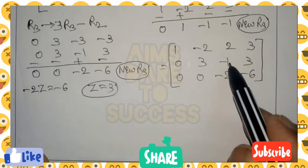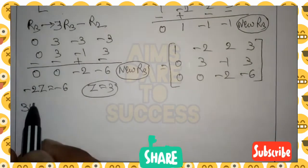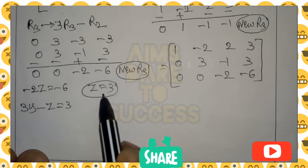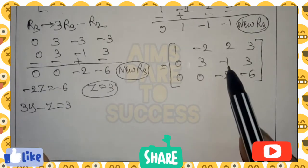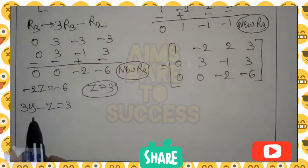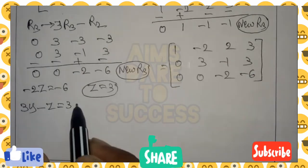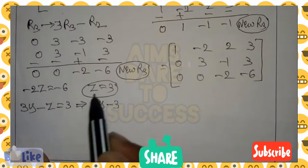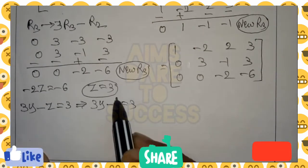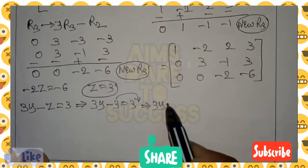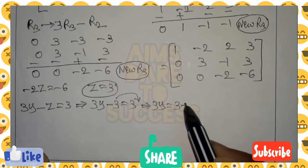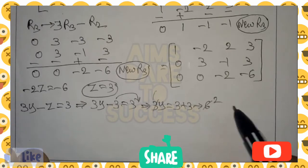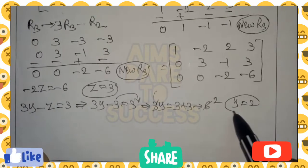Second row values are Y-related and Z-related. So 3Y minus Z equals 3. Substituting Z equals 3, we get 3Y minus 3 equals 3. Moving minus 3 to the right side gives 3Y equals 3 plus 3 equals 6. Dividing, Y equals 2.